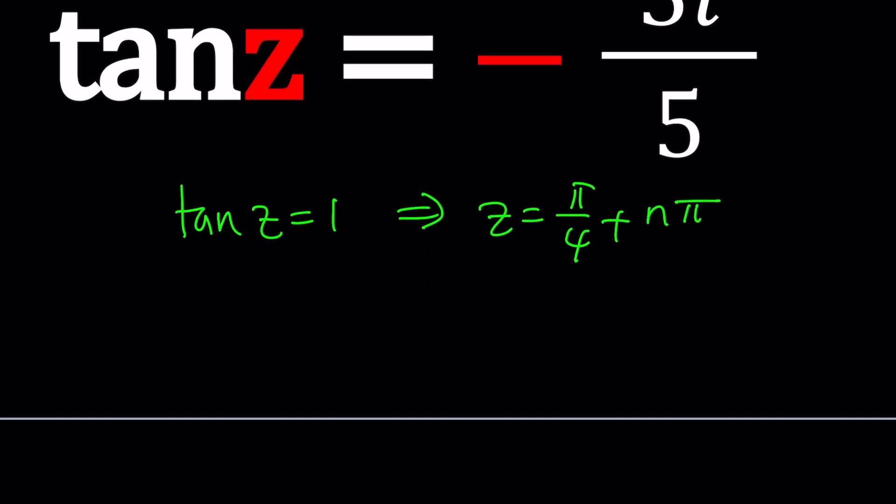So, let's go ahead and consider the following identities, which are given by Euler. Cosine z plus i sine z can be written as e to the iz. Beautiful, beautiful expression.